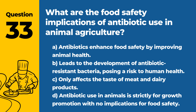Question 33. What are the food safety implications of antibiotic use in animal agriculture? a. Antibiotics enhance food safety by improving animal health. b. Leads to the development of antibiotic-resistant bacteria, posing a risk to human health. c. Only affects the taste of meat and dairy products. d. Antibiotic use in animals is strictly for growth promotion with no implications for food safety. Answer: b. Leads to the development of antibiotic-resistant bacteria, posing a risk to human health. Responsible antibiotic use is essential to prevent the spread of resistance.